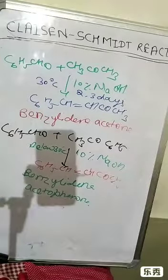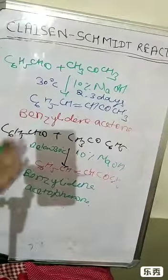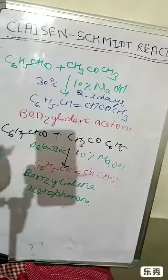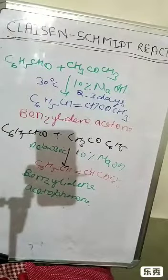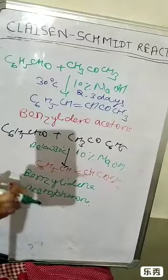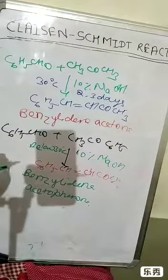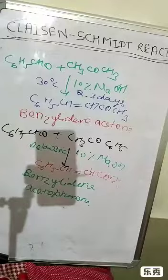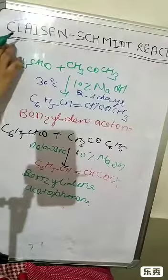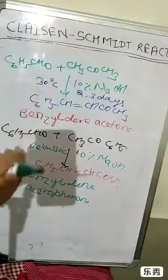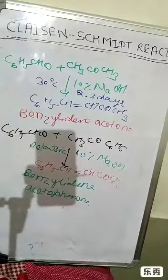The concentration of alkali is important — in the presence of a strong base, other reactions may become significant. The mechanism of the Claisen-Schmidt reaction will be discussed in the next video. Thank you.